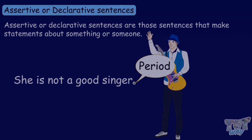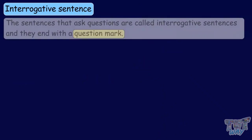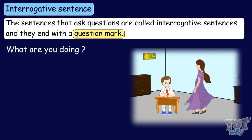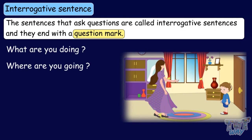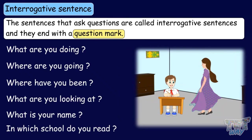Let's learn about interrogative sentences. Sentences that ask questions are called interrogative sentences, and they always end in a question mark. For example: What are you doing? Where are you going? Where have you been? What are you looking at? What is your name? In which school do you study? All these sentences are asking questions, so they are interrogative sentences and they end in a question mark.